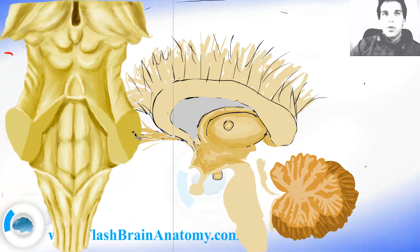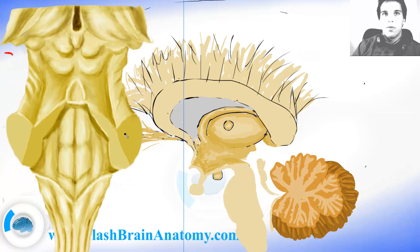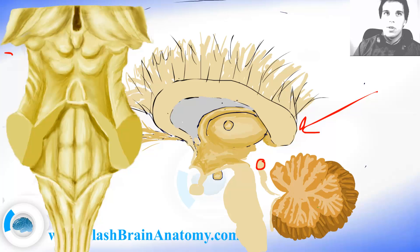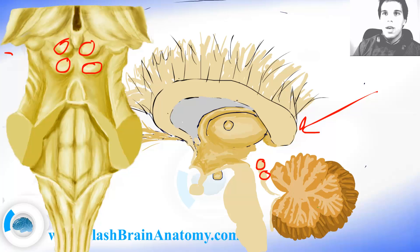If I bring in my illustration of the same thing but from the dorsal point of view — with the cerebellum removed — we would be able to see the tectum here. This is the superior colliculi here and here, and this is the inferior colliculi here and here. Then we have the posterior commissure here, and we have the pineal gland here.